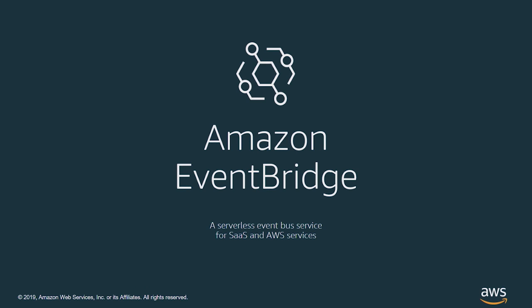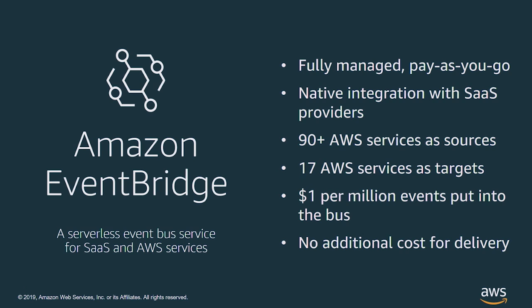This is Amazon EventBridge — a serverless event bus service. It helps you ingest and route events from SaaS applications, AWS services, and your own systems. Notable features include the fact that it's serverless, so there's no infrastructure to manage or provision. Scaling is handled for you and you only pay for what you use. It offers native integrations with 21 SaaS providers, with more to come. Traffic travels internally within AWS infrastructure when you work with SaaS providers, instead of on the public internet. It integrates with over 90 AWS services as sources and 17 services as targets. And it costs $1 per million events, with no charge for events sourced from AWS services or for the delivery of events.